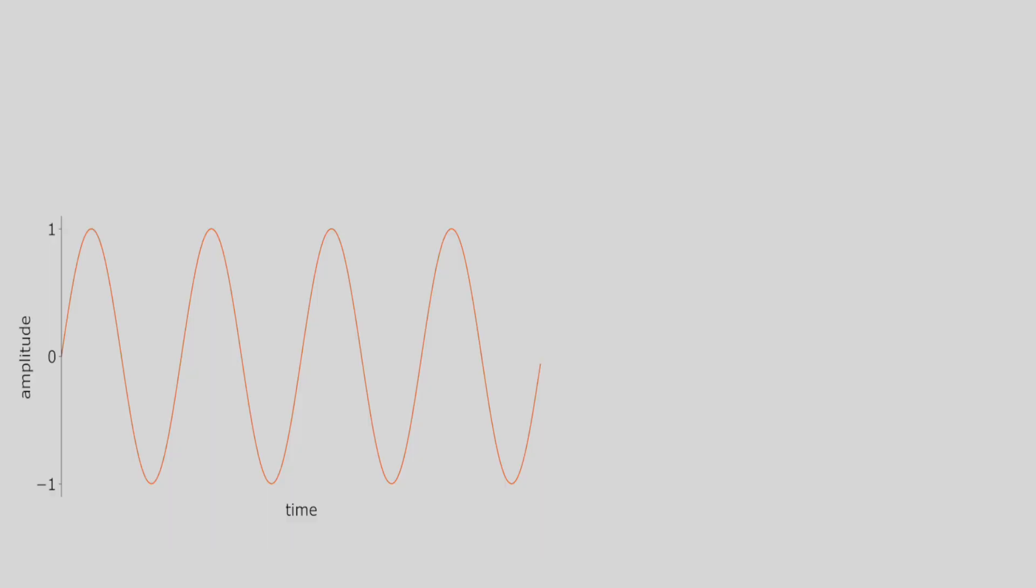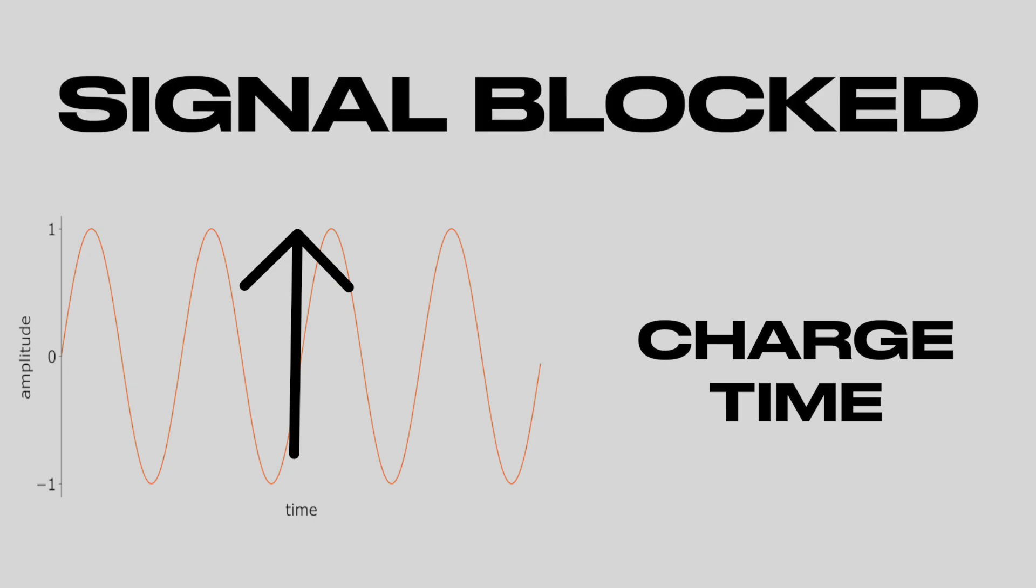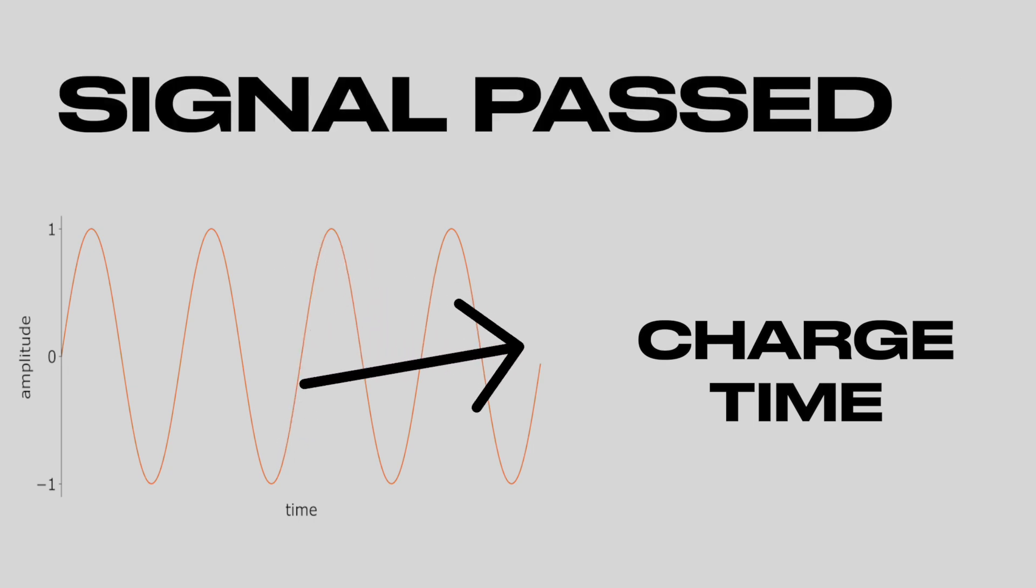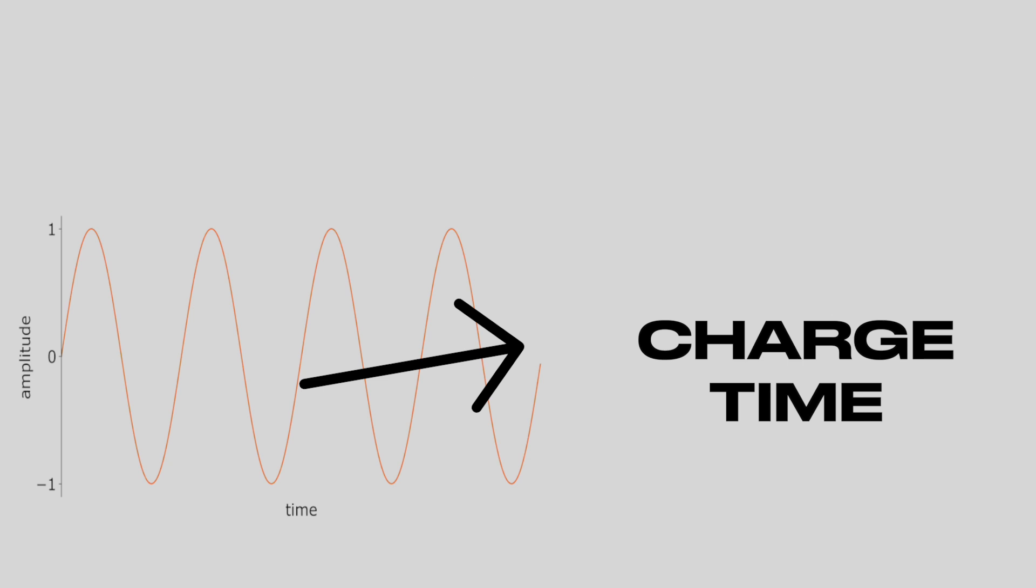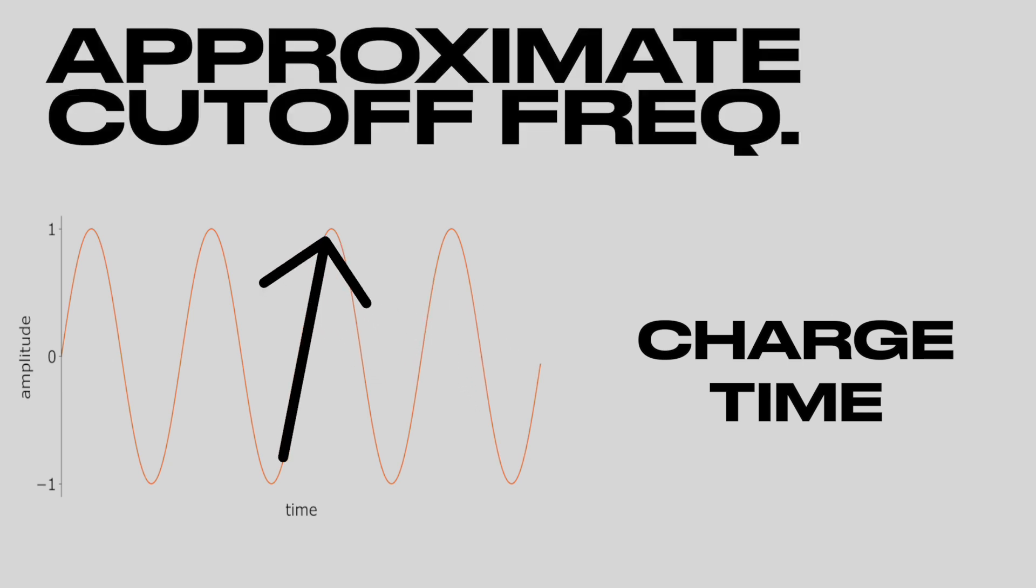Let's say that you've got a sine wave. If the rise time of your sine wave is slower than the charge time of your capacitor, it will be blocked. If the rise time is faster than the charge time, then it will be passed. And if it's the same, then it's going to be at the cutoff frequency. Which means it will have around 3 dB of attenuation.